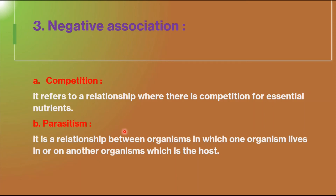The second type of negative association is parasitism, a relationship in which one organism lives in or on another organism called the host. The organism living on or in the host is called the parasite; the parasite feeds on the cells, tissues, or fluids of the host, which is commonly harmed in the process. Disease-causing organisms are the best examples of parasitism. These are the different types of microbial organism interactions in the soil.